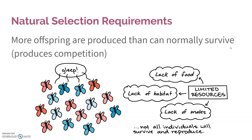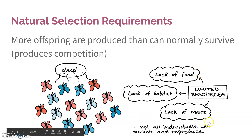Three, there has to be more offspring produced than can normally survive, because that produces competition. Without competition, we're not going to see one allele push over the edge versus the other. Things that can produce competition are things like lack of food, lack of habitat, lack of mates — anything that limits survival gives one an advantage over the other.